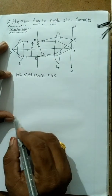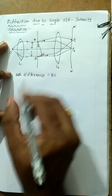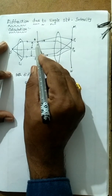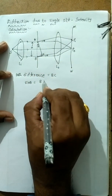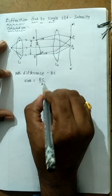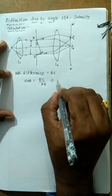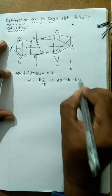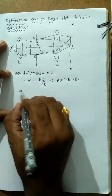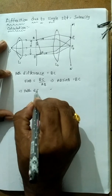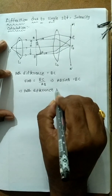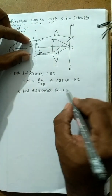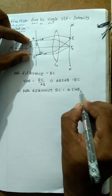Using the triangle, sin θ equals opposite over hypotenuse, that is BC over AB. Therefore, AB sin θ = BC. The path difference BC equals AB, which is the width of the slit, so path difference = A sin θ.